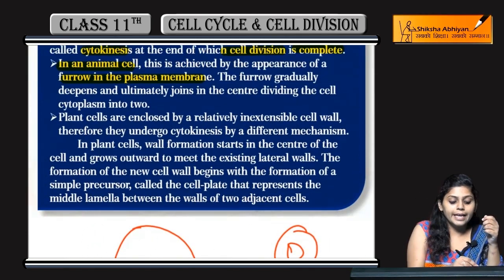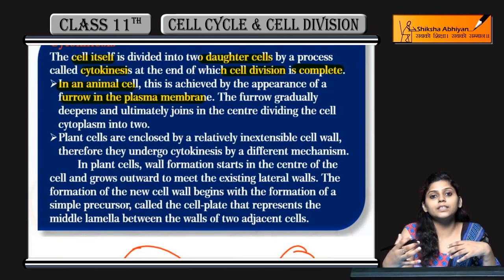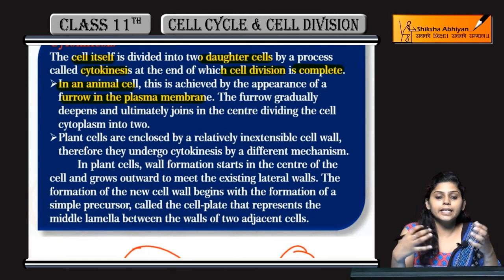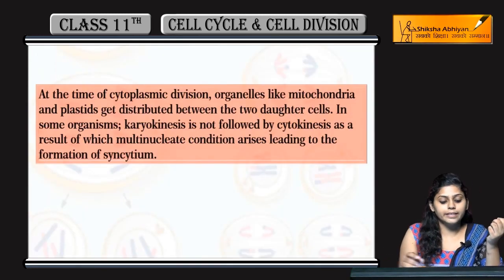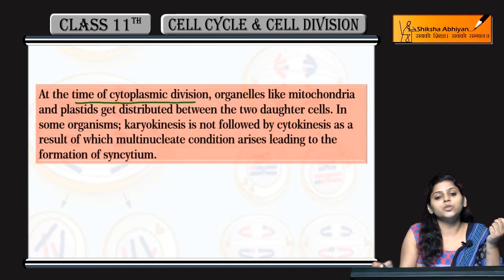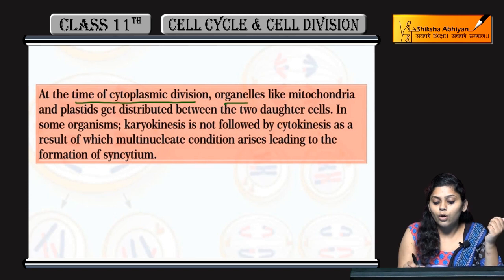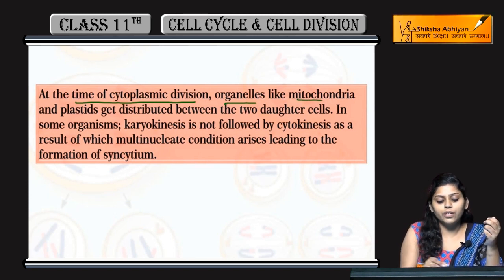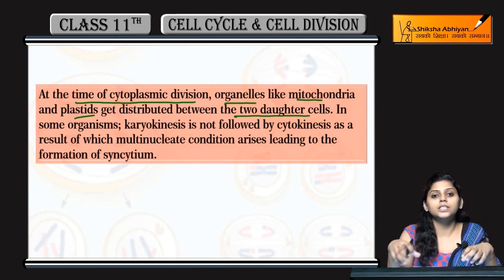So this was the comparison between animal cells and plant cells regarding cell division and cytokinesis. At the time of cytoplasmic division, organelles like mitochondria and plastids distribute into the two daughter cells.